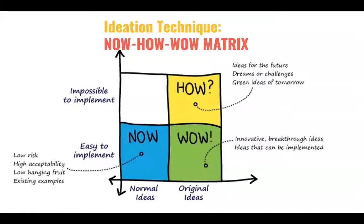Here are some typical tools for ideation. The first one I want to mention is the Now-How-Wow matrix. A 'Now' idea is a normal idea that's easy to implement — low-hanging fruit, filling existing gaps, usually bringing incremental benefits. A 'Wow' idea is more original but currently impossible to implement given existing technology. And a 'How' idea has potential for over-shifting change and is possible to implement within current reality. If you want to do this with your team, you might ask them to put sticky notes in different areas. Between the 'How' and 'Now,' you'll think of new ways to solve the problem — a way to think outside the box.